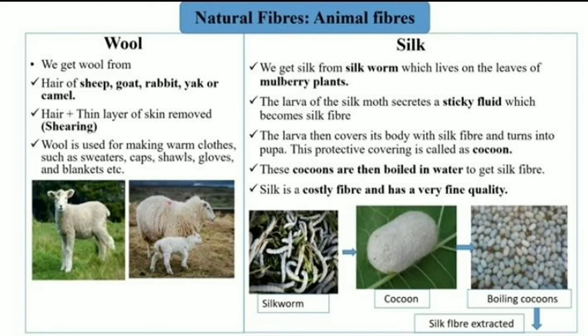Whereas for silk, we get silk from the silkworm which lives on the leaves of mulberry plants. The larva of the silk moth secretes a sticky fluid which becomes silk fiber. The larva then covers its body with silk fiber and turns into a pupa. This protective covering is called a cocoon — you can see in the picture I have shown. When the larva covers its entire body it forms the shape of the cocoon. These cocoons are then boiled in water to get silk fiber. Silk is a costly fiber of very fine quality because thousands and millions of cocoons are boiled alive in boiling water to get this silk.